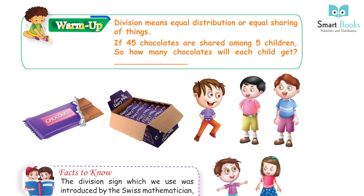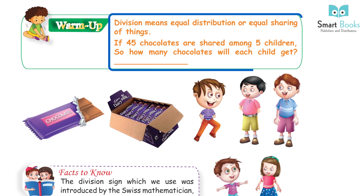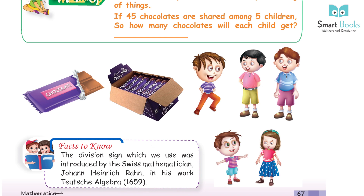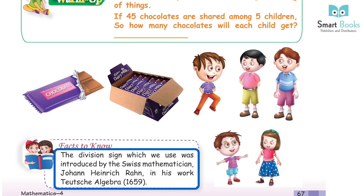Warm-up: division means equal distribution or equal sharing of things. If 45 chocolates are shared among five children, how many chocolates will each child get?